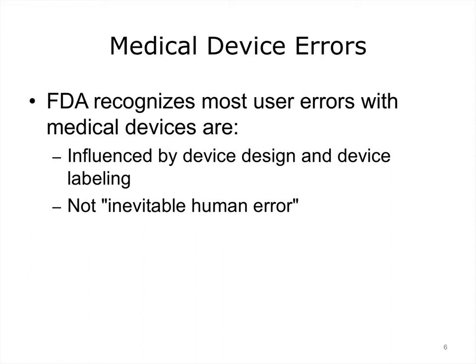The Food and Drug Administration is the government body that oversees and approves medical devices. The FDA recognizes that most user errors with medical devices are influenced by device design and device labeling—they're not inevitable human error. Usability is viewed as increasingly important by the FDA, but in many respects their standards are not quite up to what is necessary to achieve a reliable product in terms of usability. They're much more focused on the accuracy and safety of the device, but one would not want to ignore issues of usability.